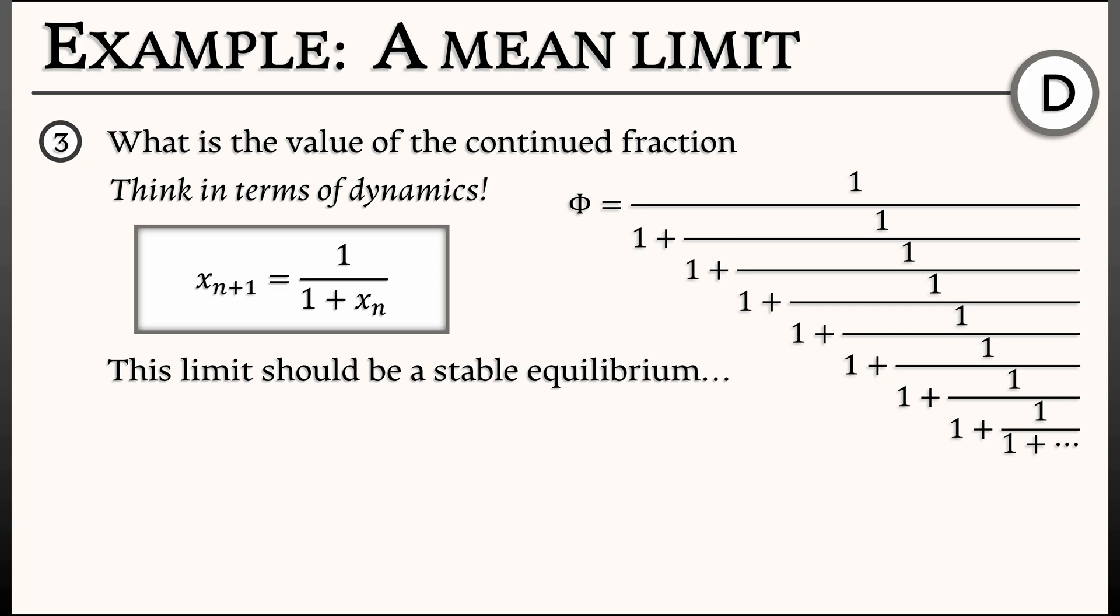So how do we solve for the equilibria? Well, let's consider where xn+1 = xn, let's call that number φ, and then substituting that into the dynamical system gives me φ = 1/(1 + φ). Multiplying through by the denominator, I get φ² + φ - 1 = 0. And using the quadratic formula, I can solve for φ. φ is (1 ± √5)/2.